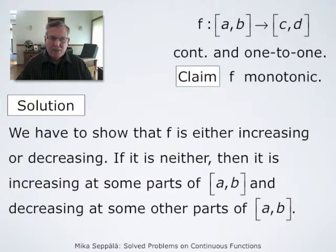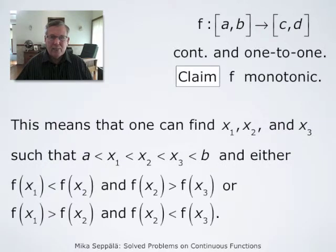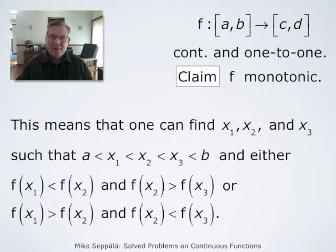If f is neither increasing nor decreasing, then it is increasing at some parts of the interval from a to b and decreasing at some other parts. It cannot be constant because f is assumed to be one-to-one. This means that we can find x1, x2, and x3 such that a < x1 < x2 < x3 < b, and either f(x1) < f(x2) and f(x2) > f(x3) — a situation where f is first increasing and then decreasing.